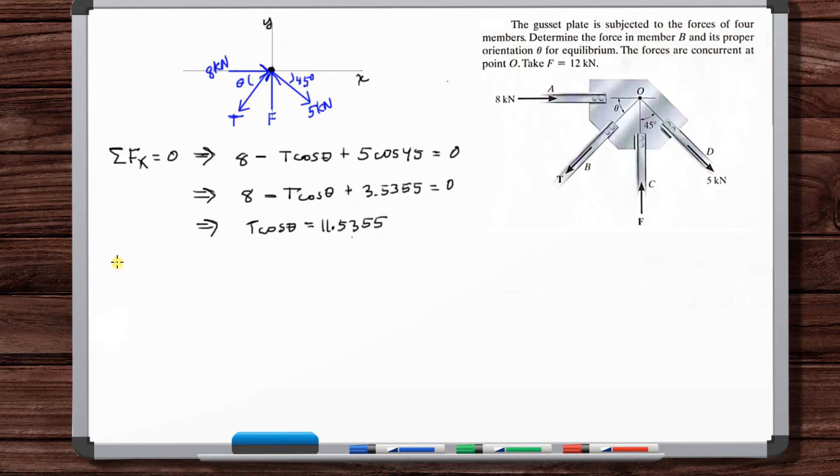Okay, so now let's sum the forces in the Y direction. So we've got minus T sine theta plus F minus five sine of 45 is equal to zero. So we know that this F, they give us that this F is 12 kilonewtons.